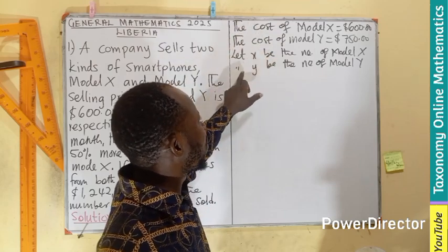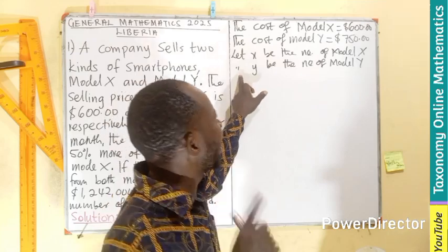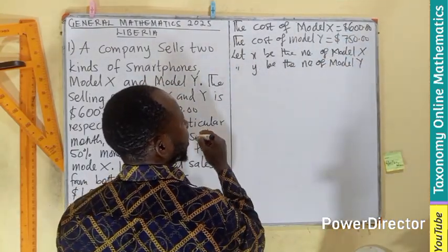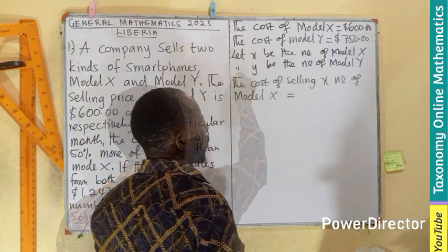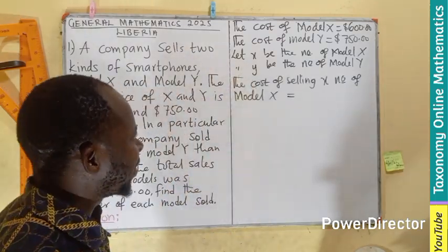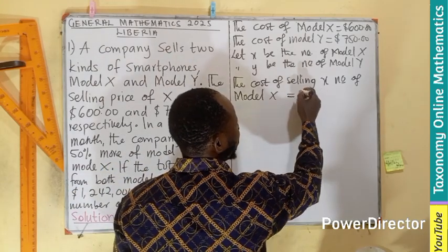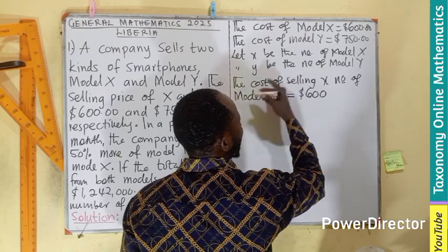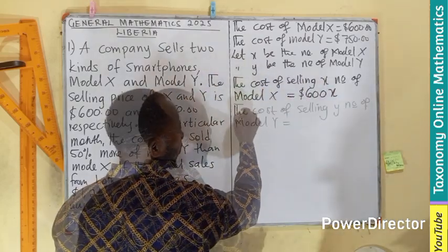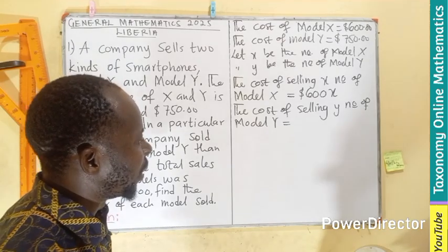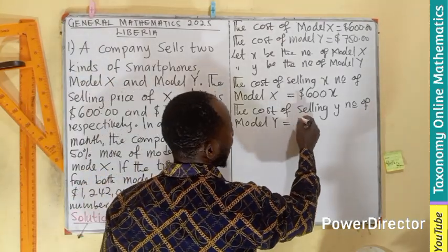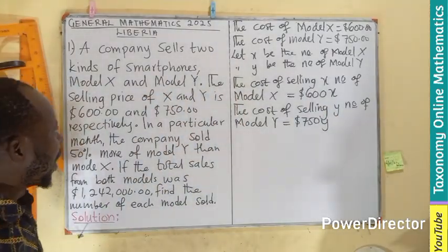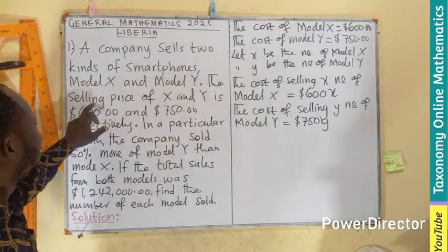The cost of selling x number of model X is going to be the unit cost times the number we are selling, which is 600 times x. The cost of selling y number of model Y will also be the unit cost 750 times y.